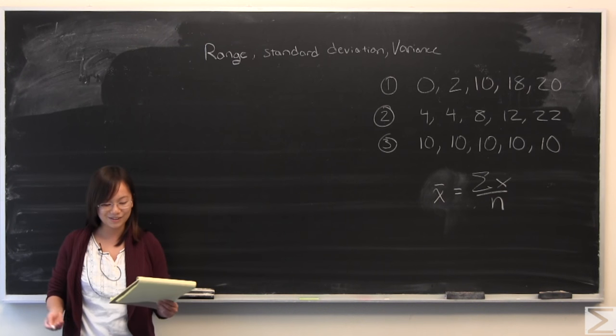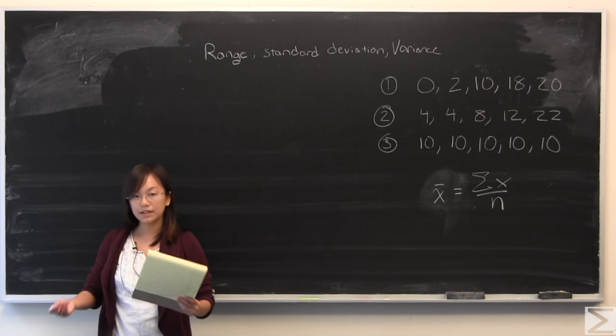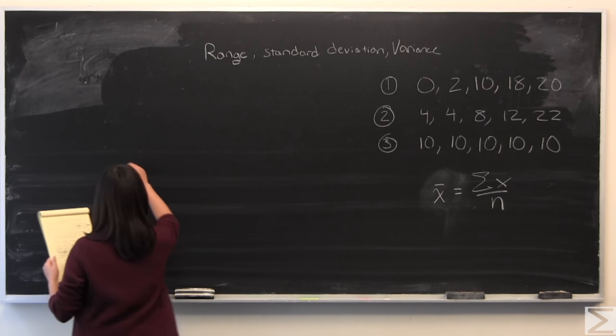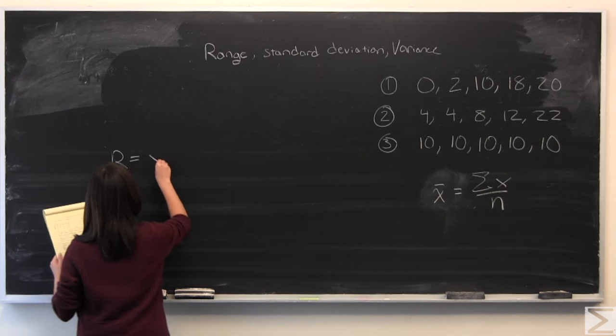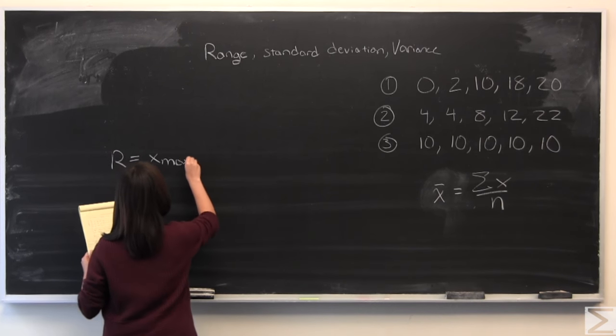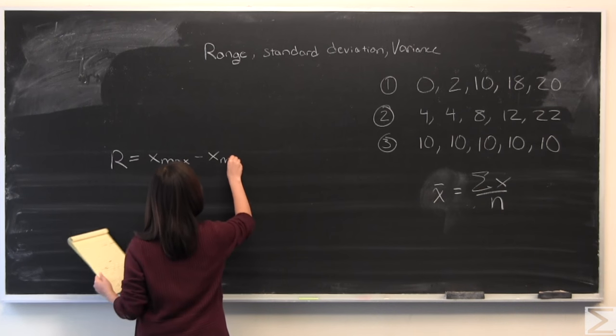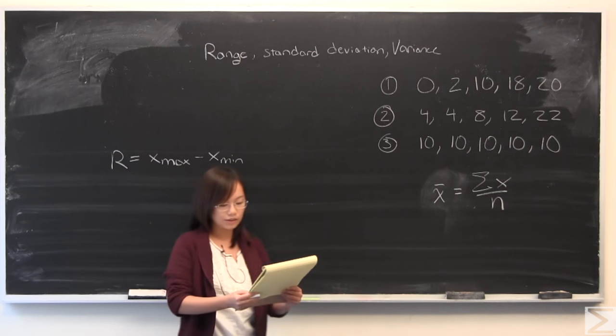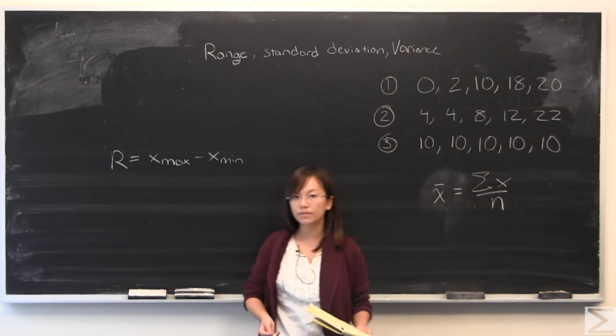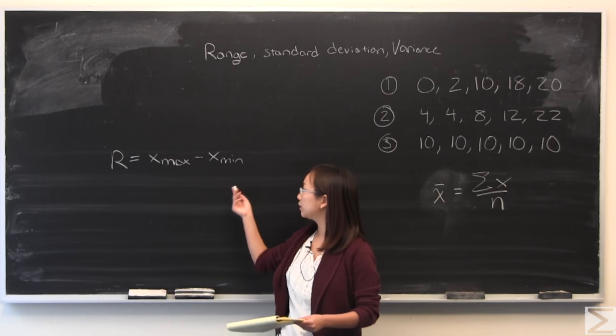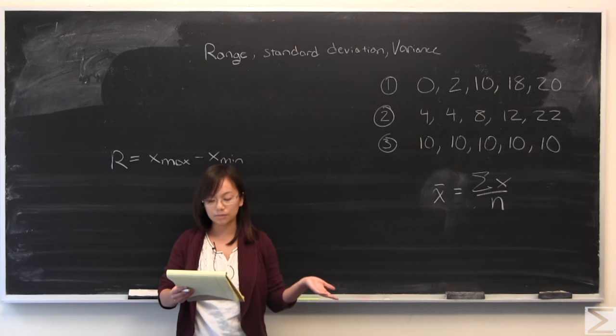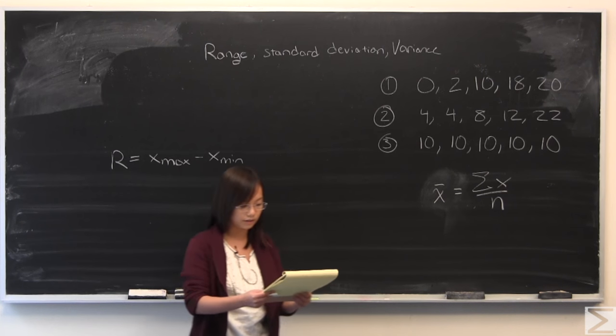Range is pretty simple. I'm going to go over it anyway. By definition, it is given by R = xmax - xmin. You take the maximum value of x from the set, take the minimum value of x from the set, and subtract them. That should give you the range.